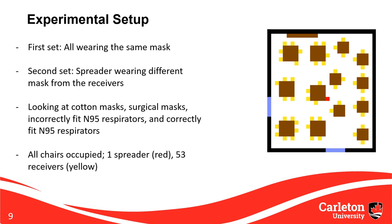The model was initially built and verified using a configuration of tables and chairs from a case study on an outbreak at a restaurant, where an index diner infected nine other diners around them. The model was built to match the restaurant's table and chair arrangement and validated by comparing the positions of resulting infected cells to the actual infected diners. The figure on the right shows an example scenario with a spreader cell in the middle in red, 53 receiver or susceptible cells in yellow, brown cells representing tables, and blue cells representing active ventilation blowing air away from them.